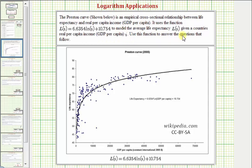We're going to use the function to answer the questions that follow. But first, notice how the relationship between GDP per capita and life expectancy does appear to be logarithmic as shown here. Notice as the GDP per capita increases, so does the life expectancy in most cases. However, notice how the increase in life expectancy is greatest when the GDP per capita is between zero and 10,000.